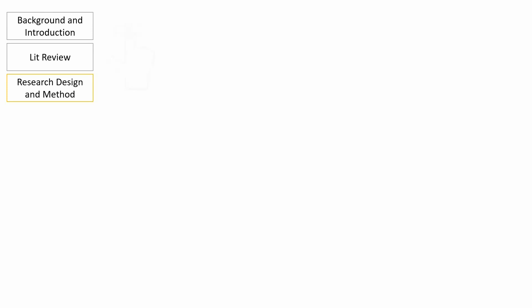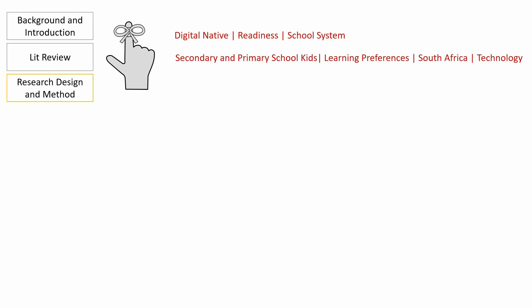Based on our example, here are our visual reminders. First we look at the important parts of our title, which are digital natives, readiness, and school system. In our background and introduction we highlight the key concepts, which are school kids, learning, preferences, South Africa, and technology. From our previous tutorial we know that we also touch on digital native, readiness, and the school system in our background, but for our visual reminders there is no point in repeating things. So essentially we only add the unique concepts of that chapter to our visual board. Next we look at our lit review, and the unique concepts there are socio-economic status, parental control, and skills transfer.